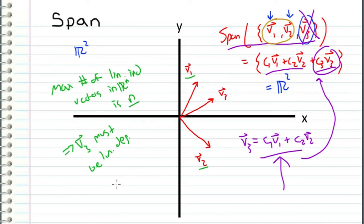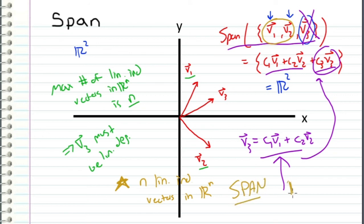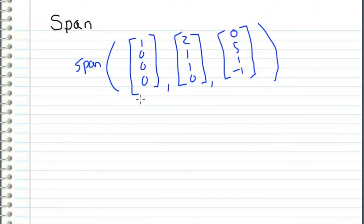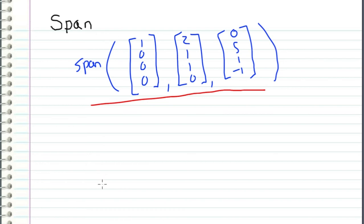This brings us to an important fact: n linearly independent vectors in Rn span all of Rn. Now, what if our vectors are higher-dimensional — for example, four-dimensional vectors? That's not reasonable to plot, so we just leave the span in equation form. The key insight is that the span of those vectors contains all their linear combinations — any point that can be reached via those vectors is within the span of the set.